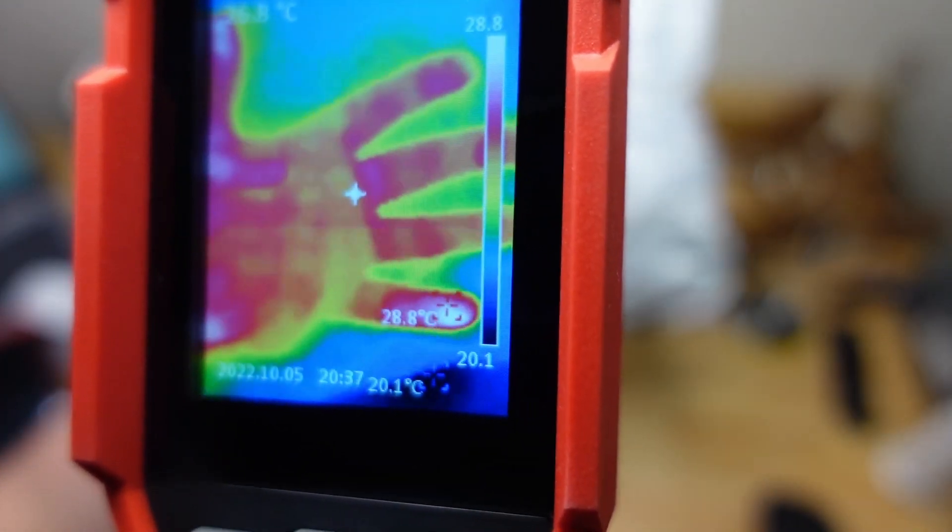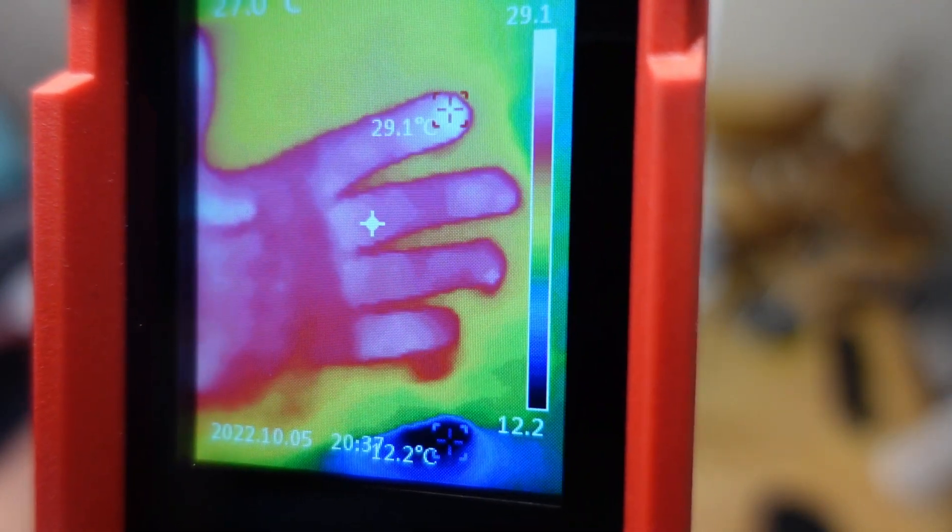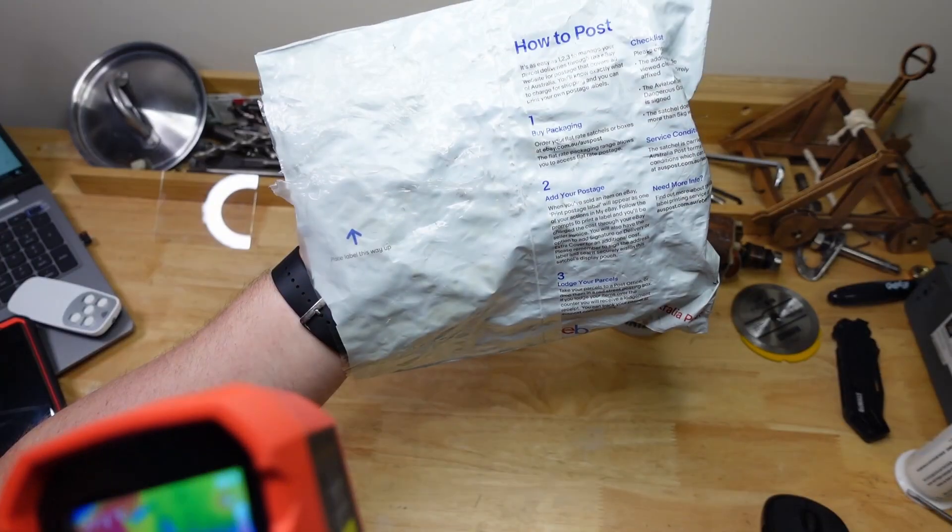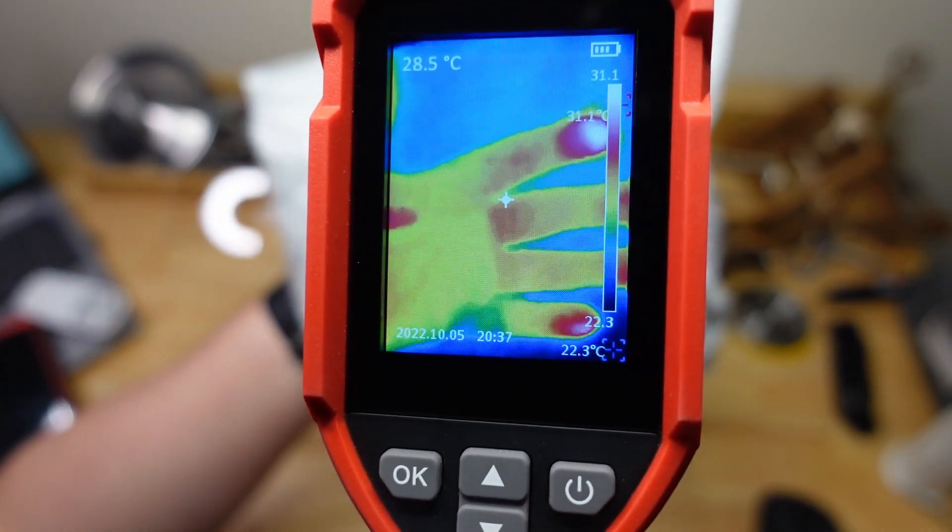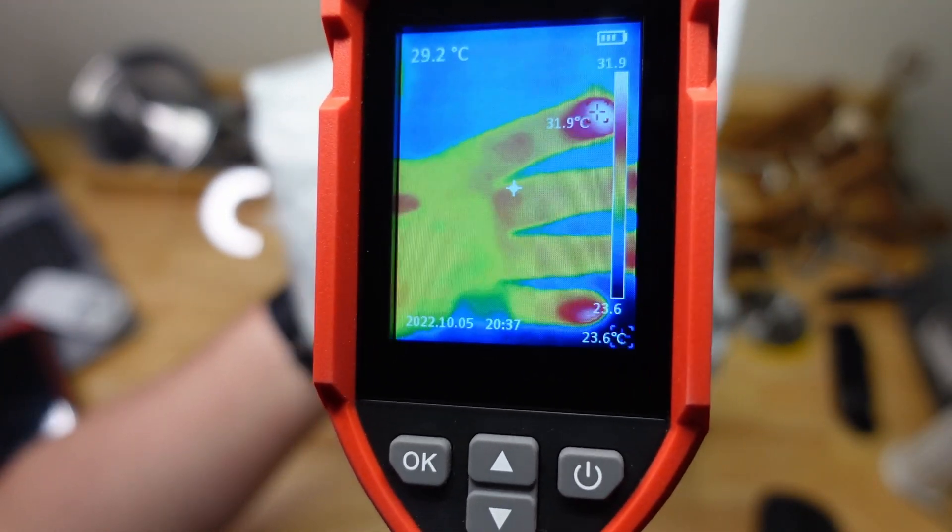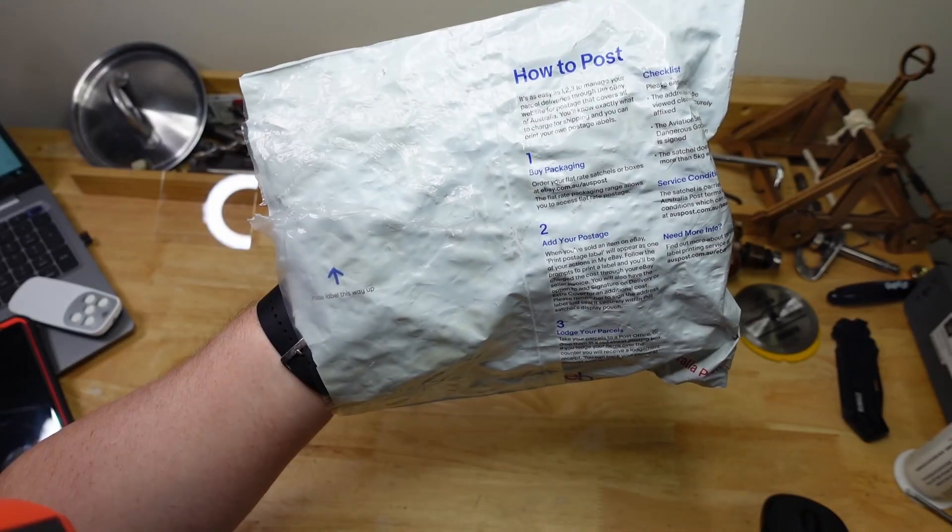So this starts opening up some pretty cool possibilities. There you can see my hand, except you can't see it with your eyes. So thermal imaging can see through some things that are optically opaque, but thermally transparent, like this bag.